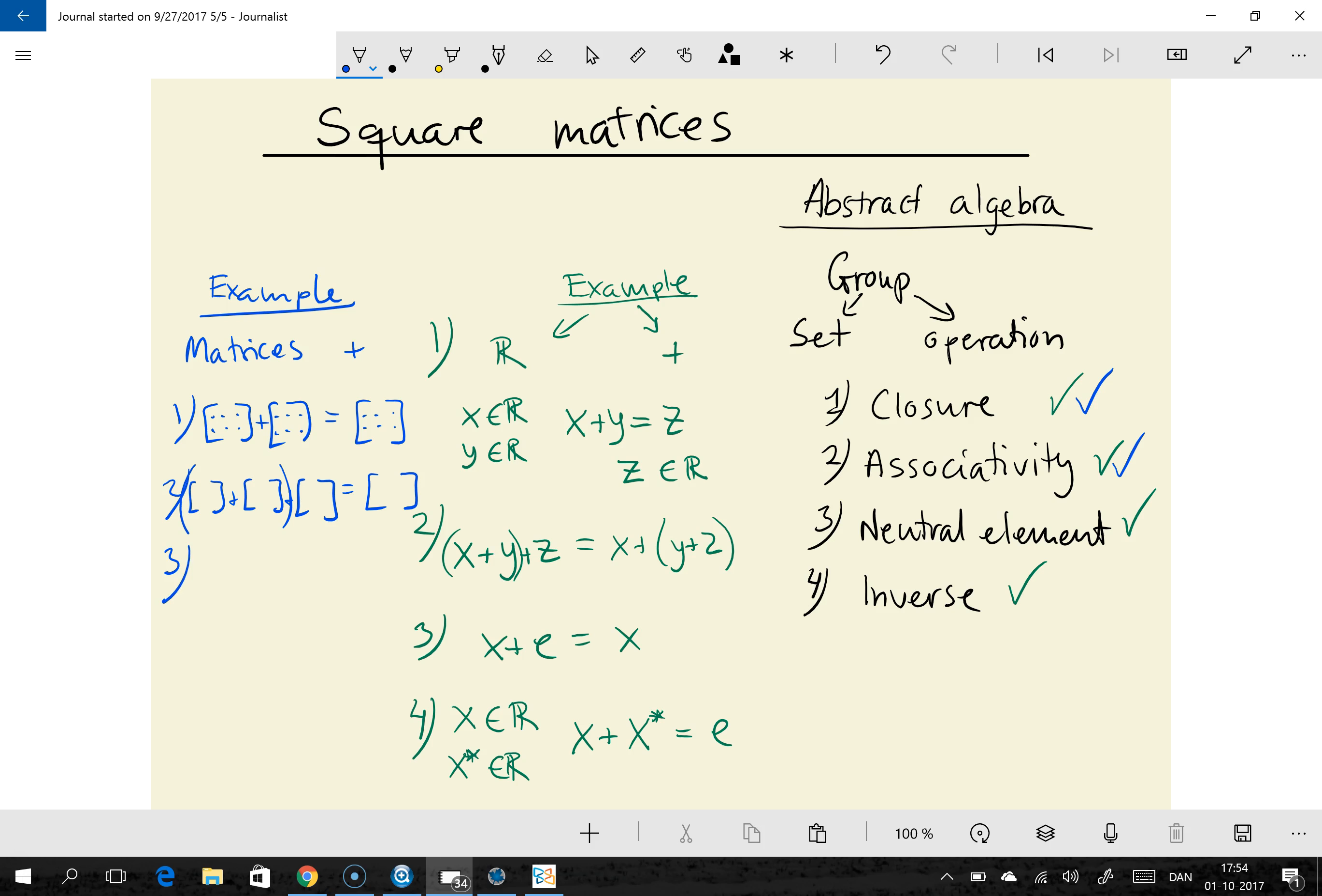The neutral element I believe it's in the case of 2 by 3 matrices this would be the neutral element. So it's just a 2 by 3 matrix consisting entirely of zeros. If you add that matrix to any 2 by 3 matrix you get the same matrix out of it. So that's the neutral element. And what about inverse?